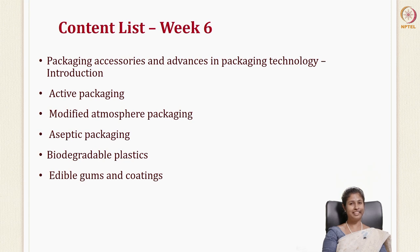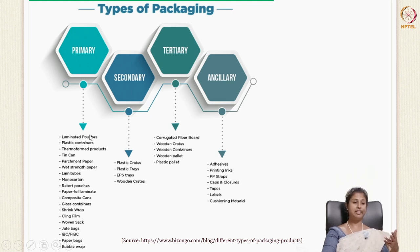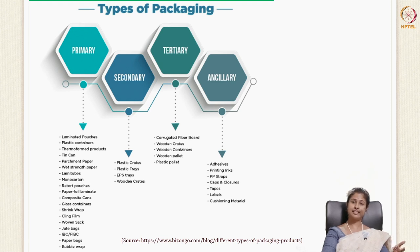Let's start with packaging accessories. As a recap, in your previous module we talked about the different types of packages — primary, secondary, tertiary — and today I'll introduce a new word: ancillary packaging. Under primary, we talked about packages in direct contact with the food, like laminated pouches, tin cans, cling films, and shrink wraps. Secondary was the outer covering of the primary package — plastic crates, plastic trays, wooden crates. Tertiary is used for shipment, including corrugated fiber boards, plastic pallets, and wooden crates.